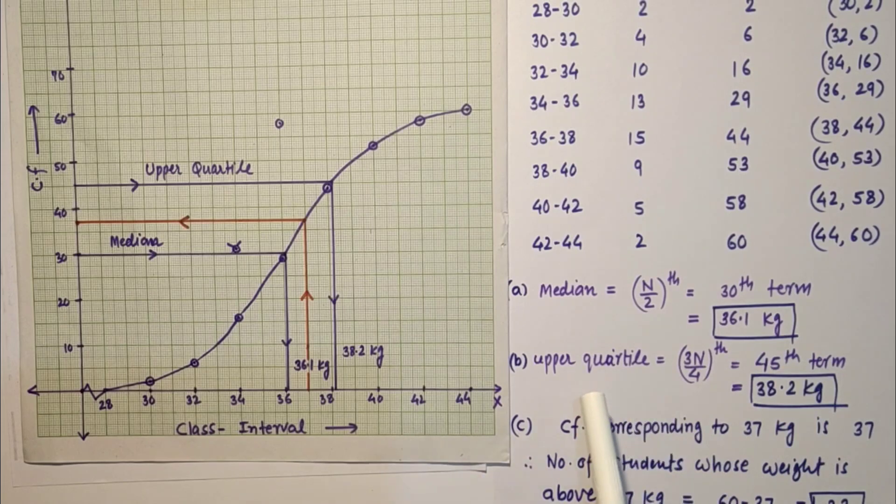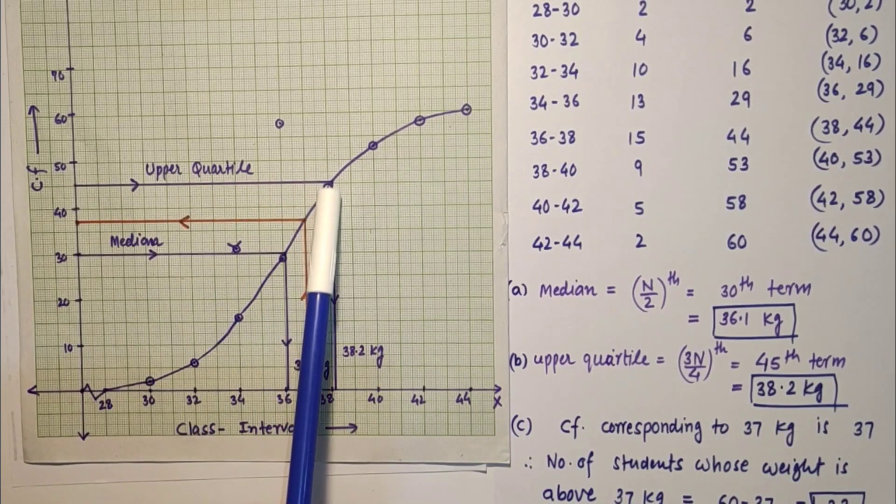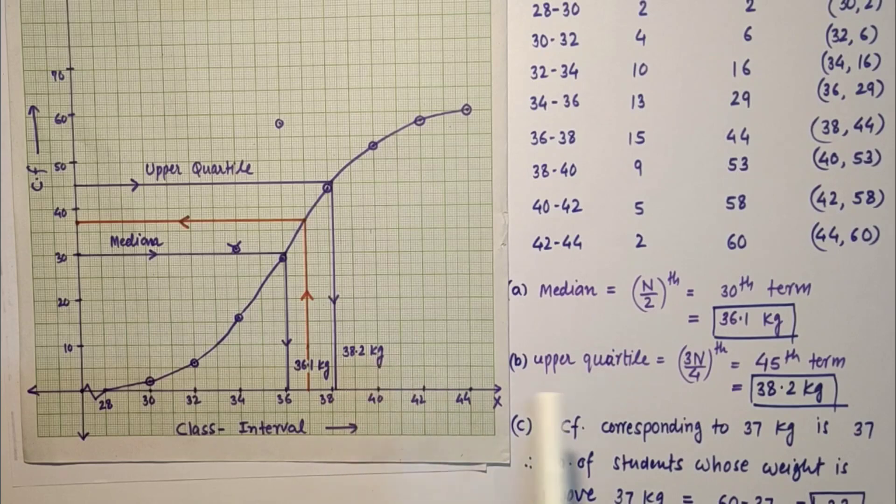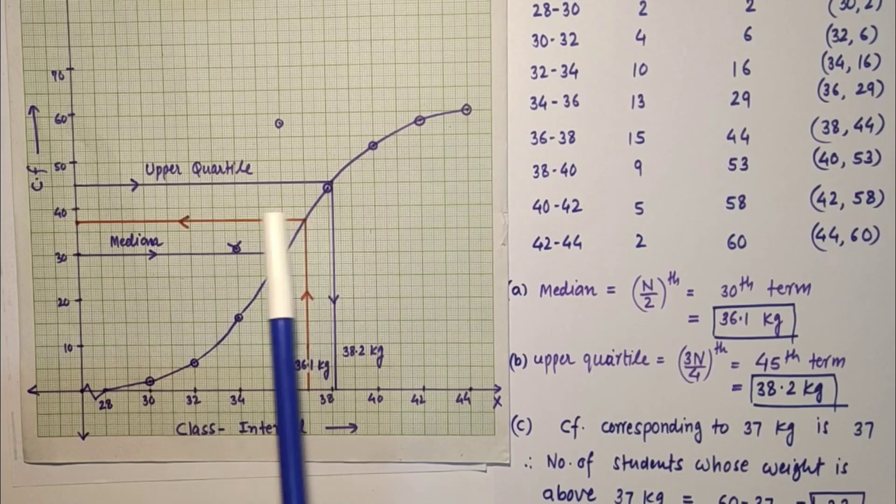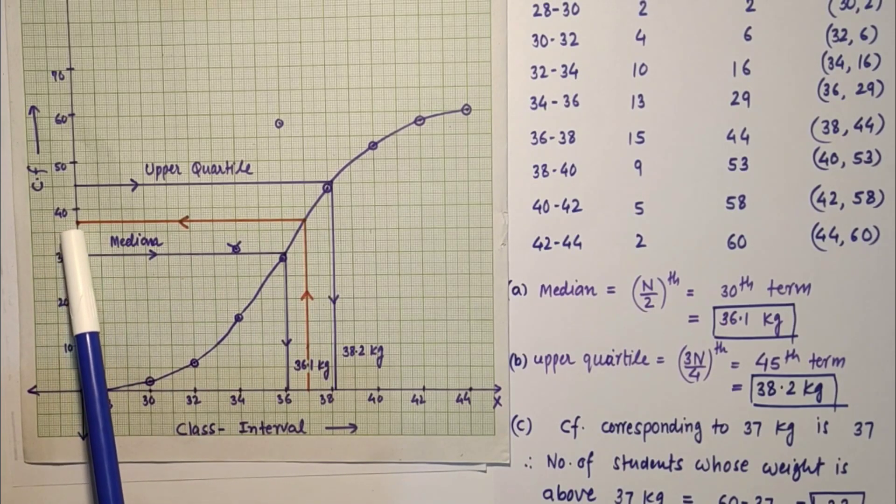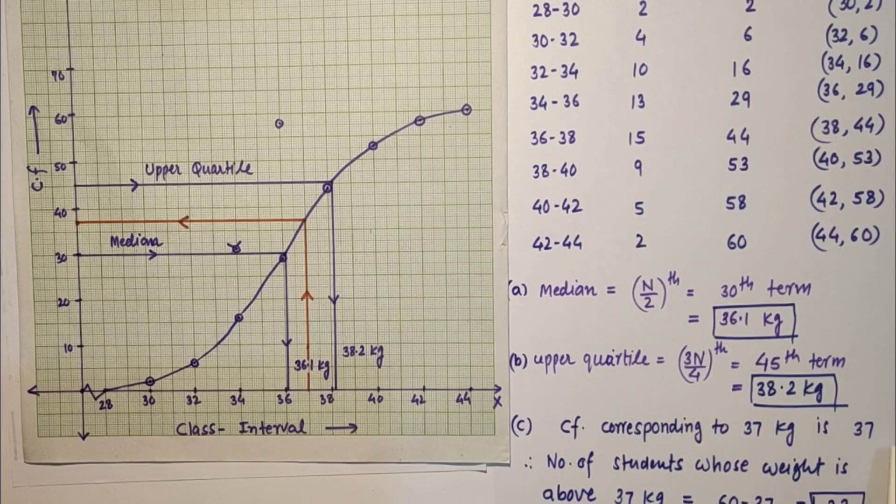And upper quartile, so upper quartile is 3n by 4th observation which is 45th observation. 45th is here, corresponding value is coming 38.2, that is the answer, that is upper quartile. And cumulative frequency corresponding to 37 kg, because we have to find the students whose weight is above 37 kg. 37 kg is here, its corresponding frequency is 37. Subtract 37 from 60, that is coming 23. So the number of students whose weight is above 37 kg is 23, that is the answer.